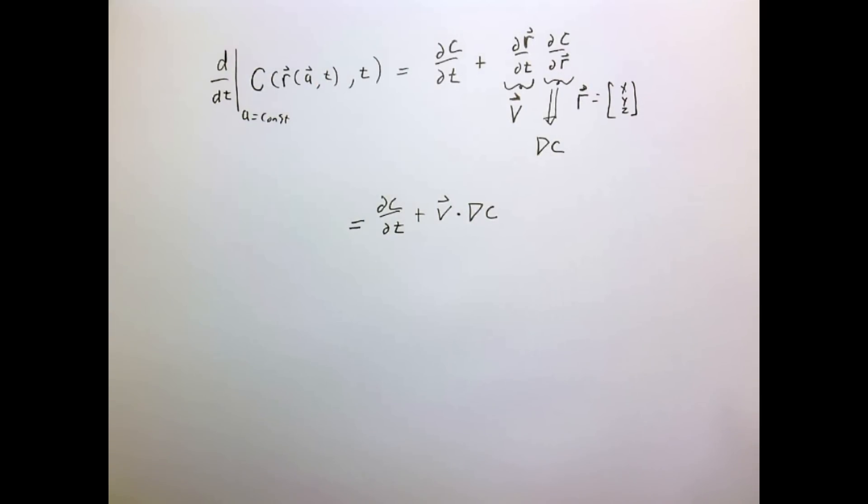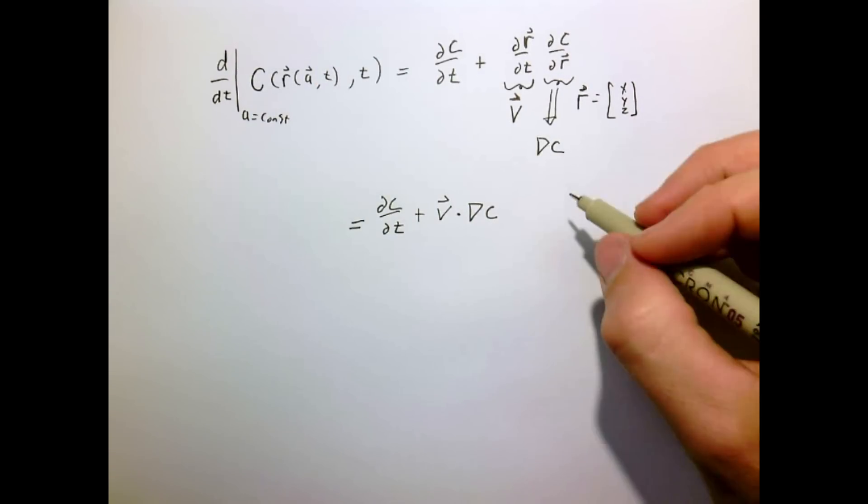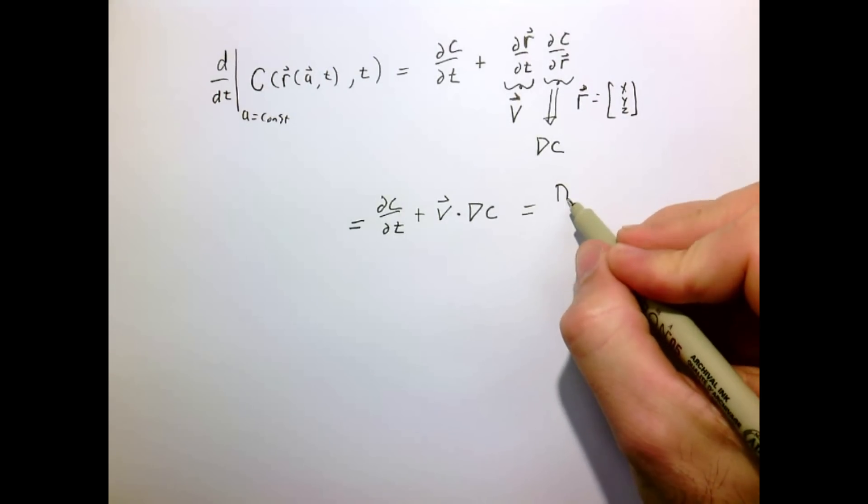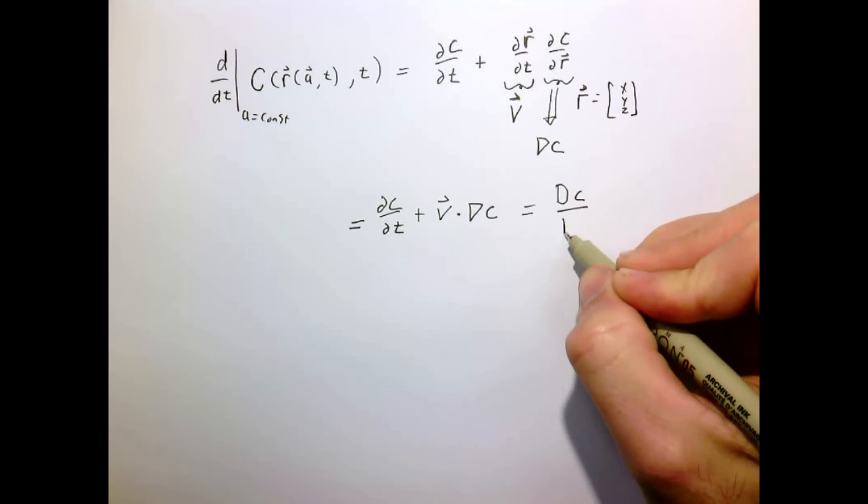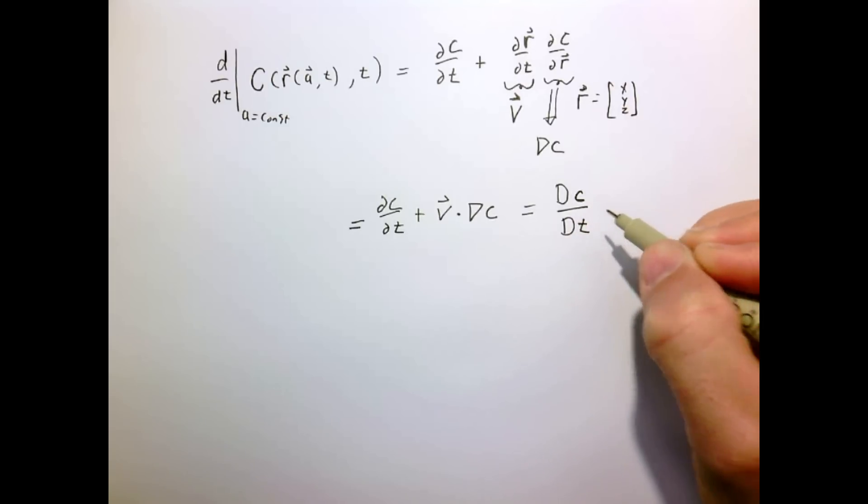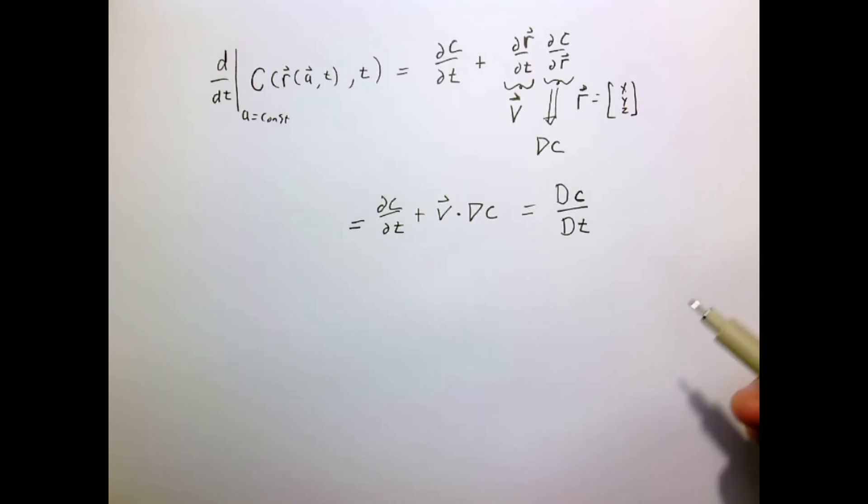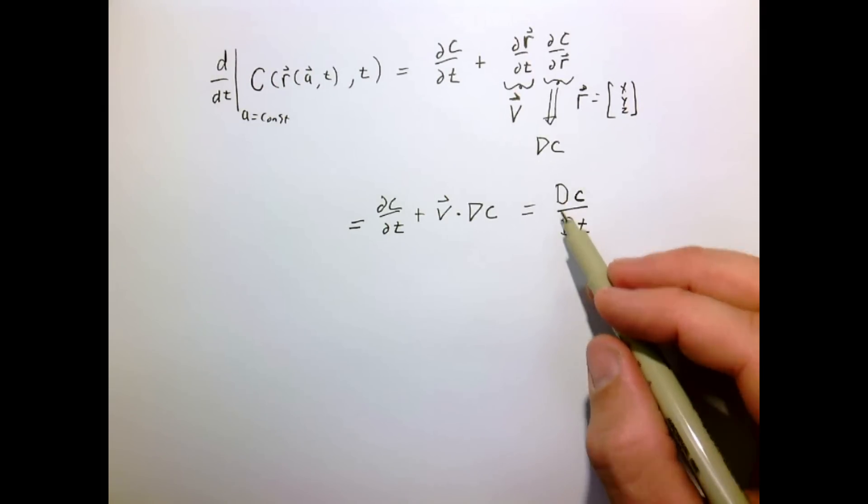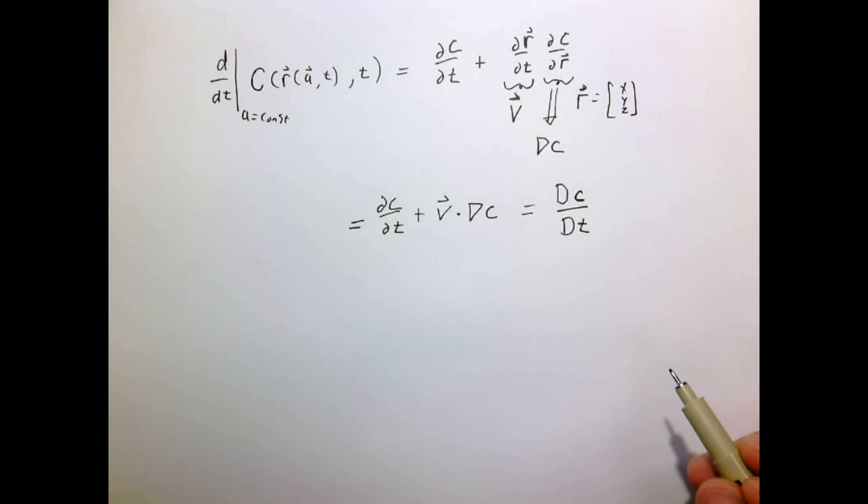Now this operator shows up so often in this course and in fluid mechanics that we give it a special name. We call it the material derivative because it's the time derivative that the material sees. Right, so if I'm going with the flow, it's the time rate of change that I see of the field. And it shows up so often that we give it a special notation, which is capital D.